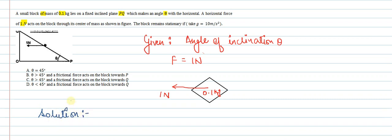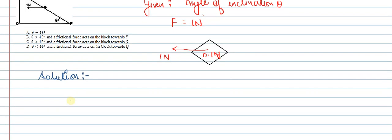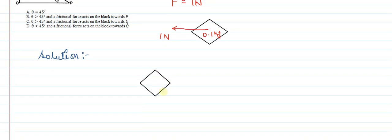Let's draw another figure for the free body diagram. We have this block with a force of 1 newton acting horizontally, and its mass is 0.1 kg. So mg will also be acting downward, and the normal force will be acting perpendicular to the inclined surface. We know this angle is theta.